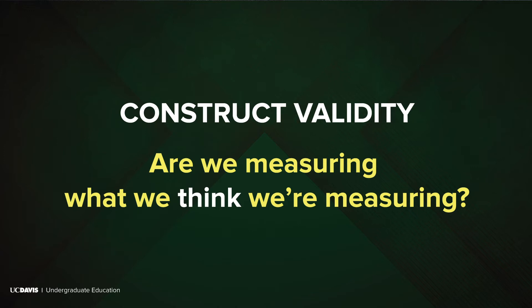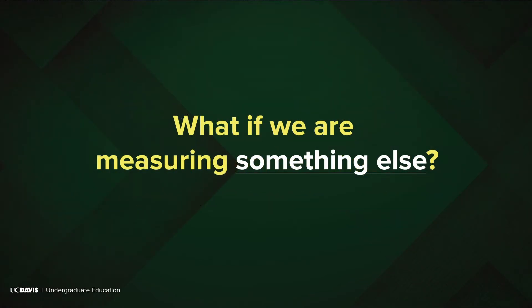Construct validity, for those who aren't familiar, is an assessment term that basically means: are we measuring what we think we're measuring? And then, perhaps more problematically, what if we're actually measuring something else? There are two current examples right now at UC Davis that we're talking about that I think illustrate this question really well.